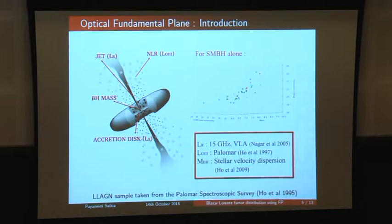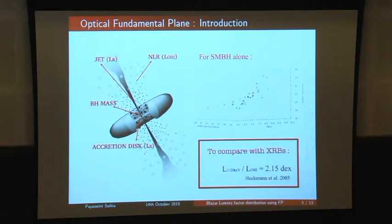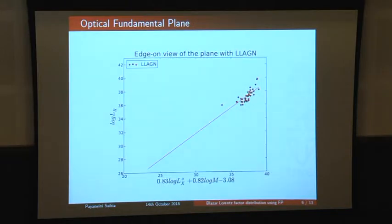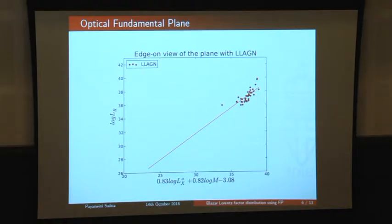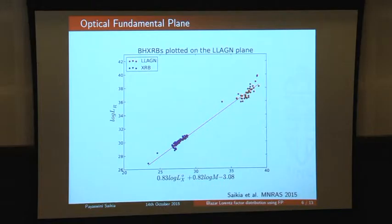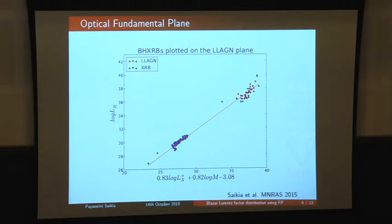If we want to include X-ray binaries, we need an estimate of the X-ray emission from the OIII line emission, for which we use a Heckman et al. correlation. Here I'm showing the edge-on view of the plane: this is just the low-luminosity AGN and the best-fit plane, extrapolated to the lower mass region. Without refitting, if I plot the hard-state X-ray binaries, they agree completely with the low-luminosity AGN sample — showing that even using the OIII line in the optical, we can find the fundamental plane.